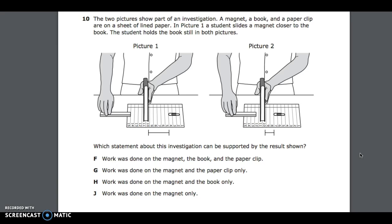F, work was done on the book and the paper clip; G, work was done on the magnet and the paper clip only; H, work was done on the magnet and the book only; J, work was done on the magnet only.